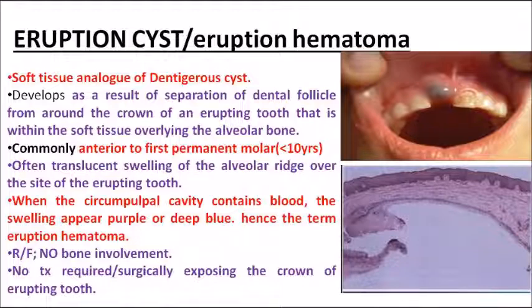The eruption cyst is mostly considered to be a soft tissue analog of the dentigerous cyst. The dentigerous cyst is an intra-osseous type, and its soft tissue counterpart is the eruption cyst or eruption hematoma. The most common site, important for MCQs, is anterior to the first permanent molar, and it is mostly seen in children below 10 years of age. Radiologically there is no bone involvement.